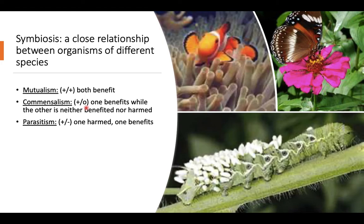Commensalism means that one organism benefits — that's a plus — while the other is neither benefited nor harmed — that's zero. An example of a commensalistic relationship is Nemo, a clownfish that lives within the sea anemone. The sea anemone provides a habitat and shelter for the clownfish, but the clownfish doesn't really provide anything for the sea anemone — so the sea anemone is neither benefited nor harmed.